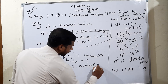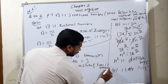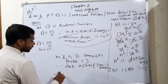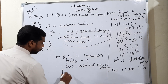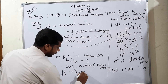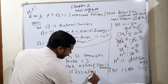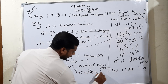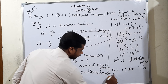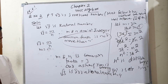Our assumption is wrong. If the assumption is wrong, it means root 3 is irrational. Therefore, root 3 is an irrational number. This is our final conclusion.